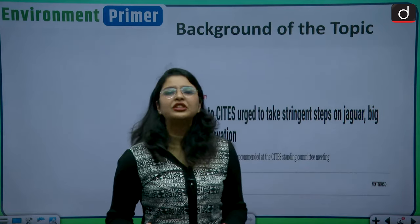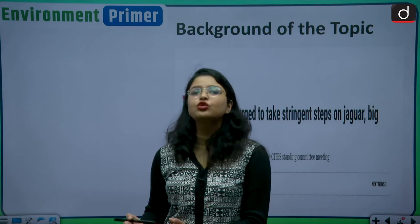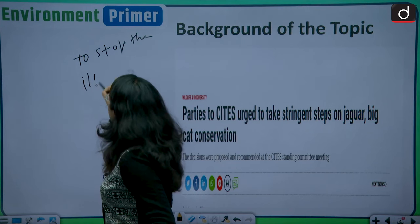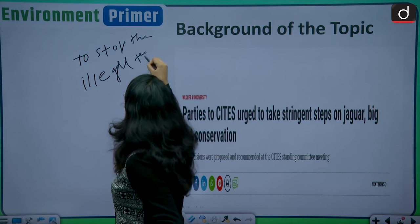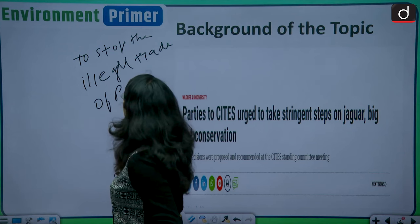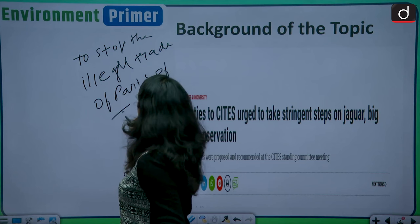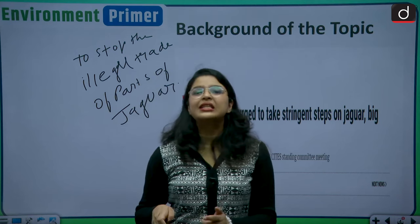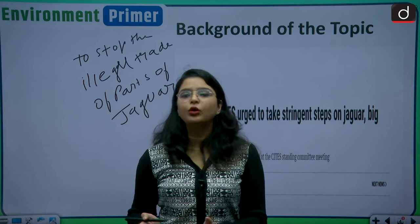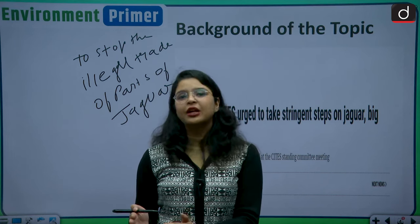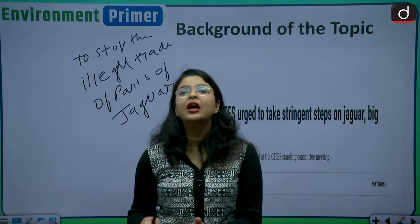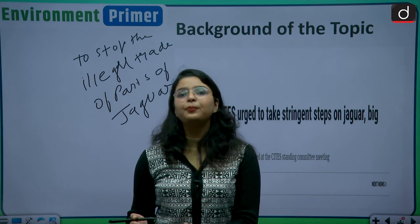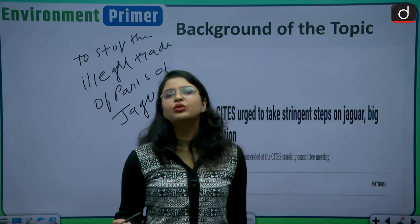The parties to this CITES Convention have recently agreed that we need to stop the illegal trade of parts of jaguar. This animal, namely jaguar, is subjected to illegal trade and poaching throughout the globe. That is why the parties to the CITES Convention have agreed that they will cooperate and will stop the illegal trade and exploitation of this jaguar and will also preserve the big cat population.